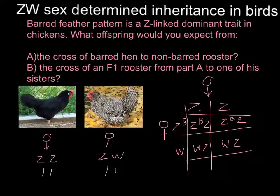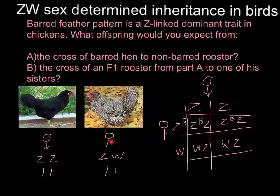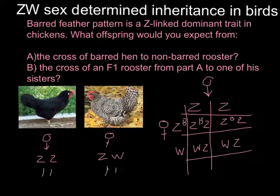So we have here two males and two females. Both males will have the barred feather pattern. The two females will have the same feather pattern as the father. So males will have the same pattern as the mother, and females will have the same pattern as the father. This is the solution for Question A.